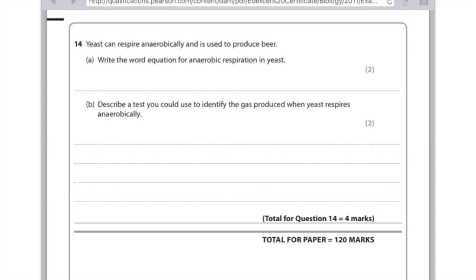Question 14. Yeast can respire anaerobically and is used to produce beer. Write the word equation for anaerobic respiration in yeast. So remember that they use glucose and what they do is they break that down into carbon dioxide plus ethanol. You could have written alcohol if you didn't want to specify ethanol there.